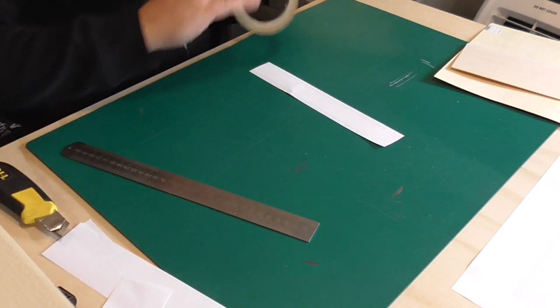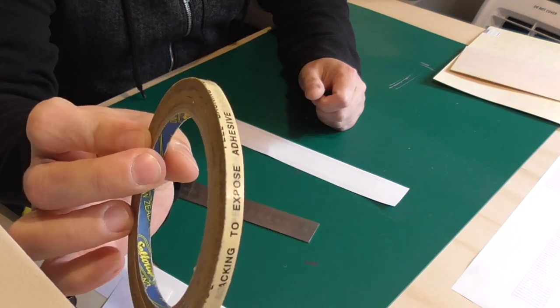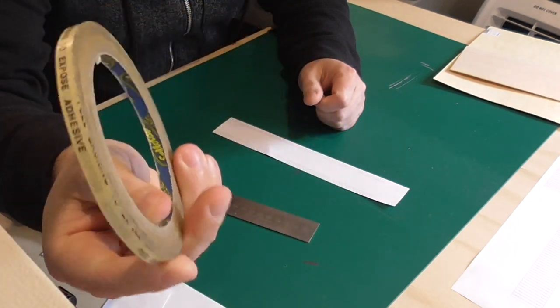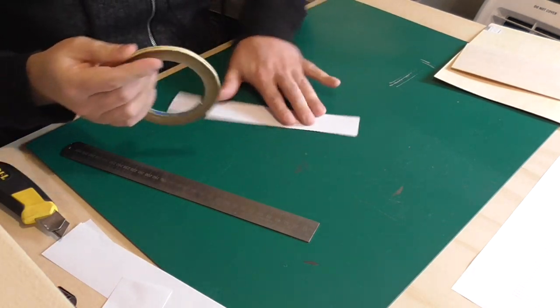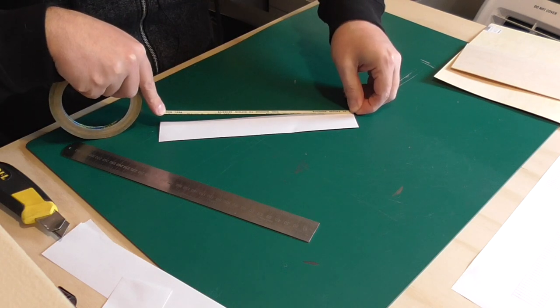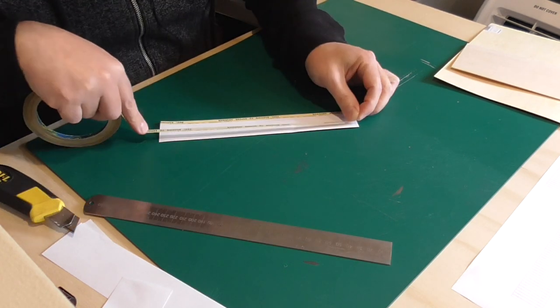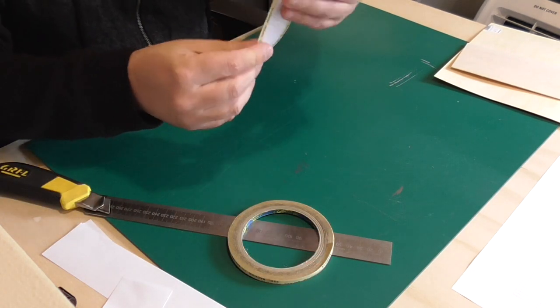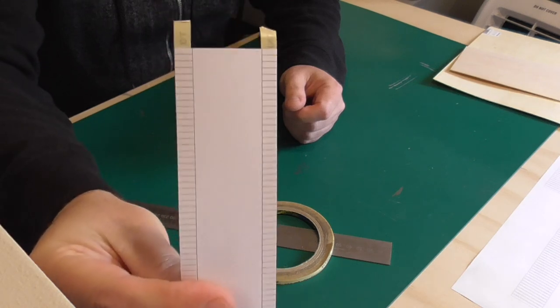Now what we have here is just some standard double-sided tape. I think this is about five mil. Essentially what I'm going to do is apply the double-sided tape to each edge, and we're just going to stick those down right on the edge and one for the other side.